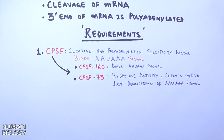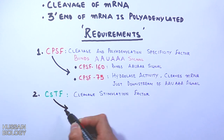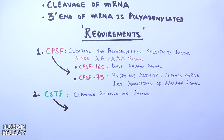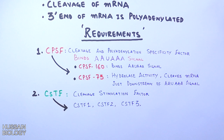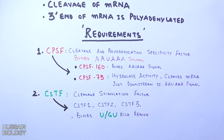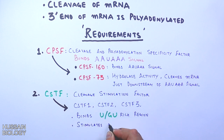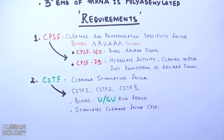The second factor is CStF, cleavage stimulation factor. For the polyadenylation process we have three cleavage stimulation factors: CStF1, CStF2, and CStF3. This CStF factor binds the U or GU rich region on the mRNA molecule, which is mostly a few bases downstream of the AAU AAA signal. This CStF factor stimulates the CPSF factor to drive the cleavage process.